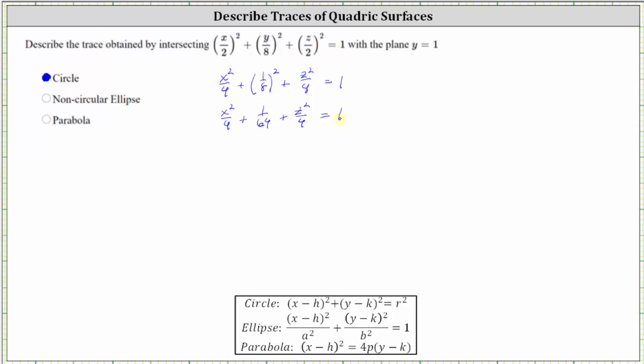And now let's isolate the variable terms by subtracting one sixty-fourth on both sides. One minus one sixty-fourth is sixty-three sixty-fourths.